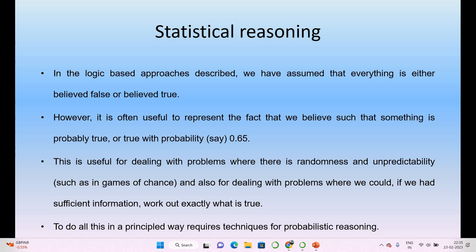Normally this kind of problem — where there is randomness and unpredictability, and also for dealing with problems where we could, if we had sufficient information, determine things exactly true — for such problems we can use probabilistic reasoning. This kind of problem is useful for gaming and other things. For getting probabilistic values we should go for probabilistic reasoning in mathematics, which gives the exact value of a particular thing that has happened.